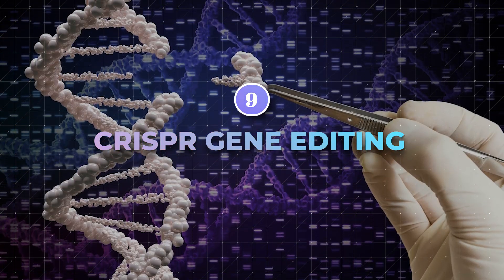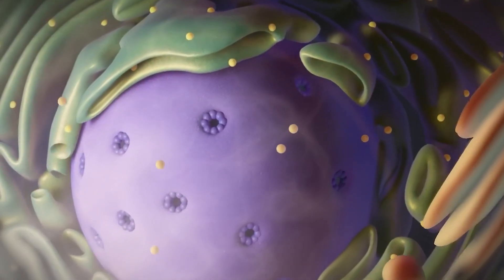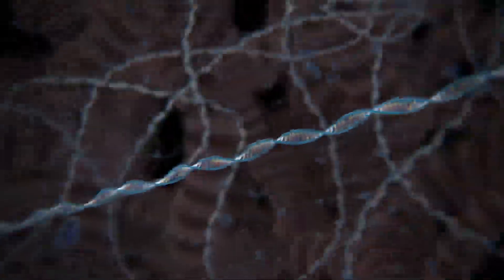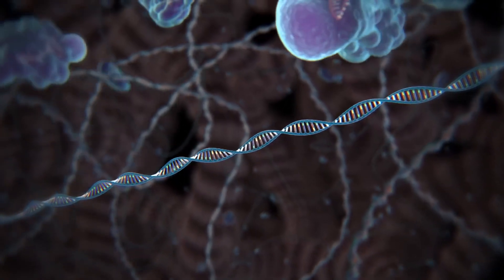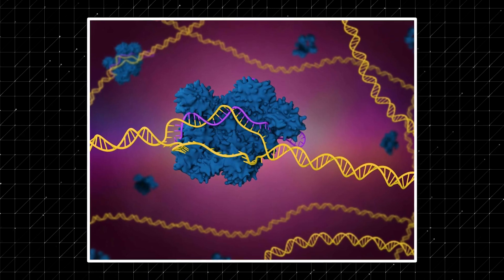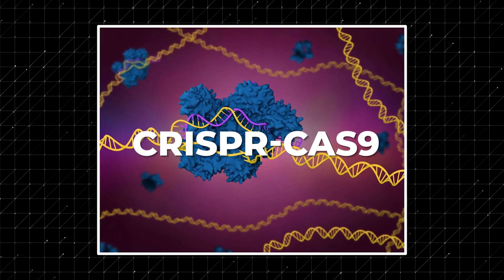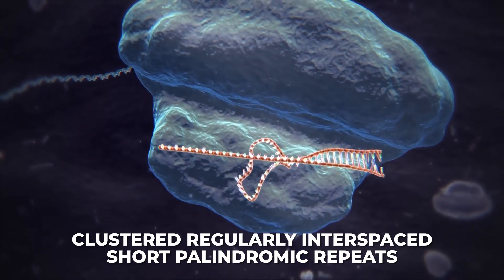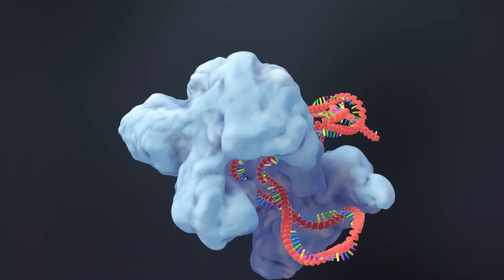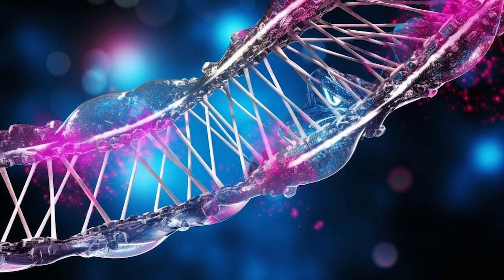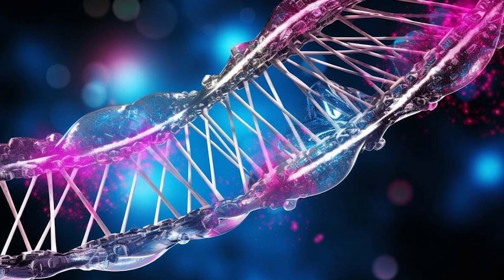Number 9: CRISPR Gene Editing. Next, I'm going to tell you about none other than CRISPR gene editing. Here's how it works. If we make a typo, we can use the find function to spot and fix or delete it. In our DNA, this job is handled by CRISPR-Cas9. CRISPR, short for clustered regularly interspaced short palindromic repeats, has two main parts: the Cas9 protein which chops up DNA, and a guide RNA that targets the DNA for editing.